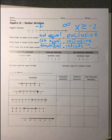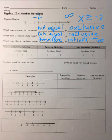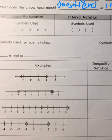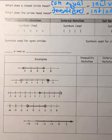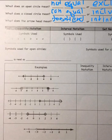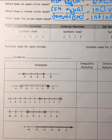From negative infinity to positive infinity. When we look at our symbols used, you have less than, greater than — the less than looks like an arrow pointing left. Less than, greater than, less than or equal to, greater than or equal to.